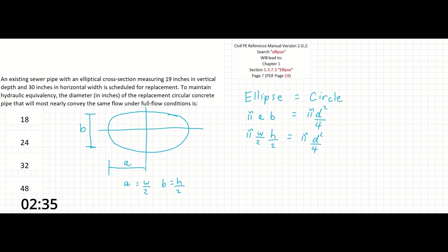Finally, we can plug in our knowns from the equation. Our width is 30 inches, so we're going to say π times 30 inches over 2 times the height of 19 inches over 2 equals πd² over 4.